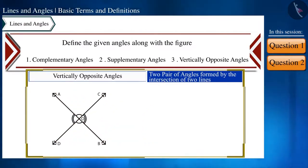Like here. Line AB and line CD are intersecting each other at the point O. As a result, we get two pairs of vertically opposite angles. The first pair is angle AOC and angle BOD and the second pair is angle AOD and angle COB.